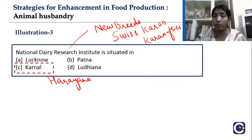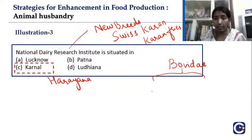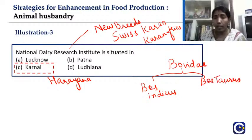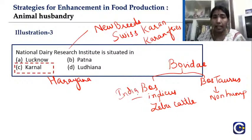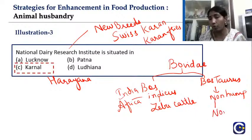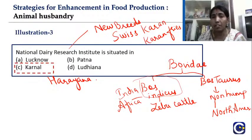Within the family Bovidae, we have two sets: Bos indicus — the zebu cattle which have a hump, common in India and Africa — and Bos taurus — non-humped cattle more confined to America, North America, and Europe. All the Indian cattle species come under Bos indicus, zebu cattle.